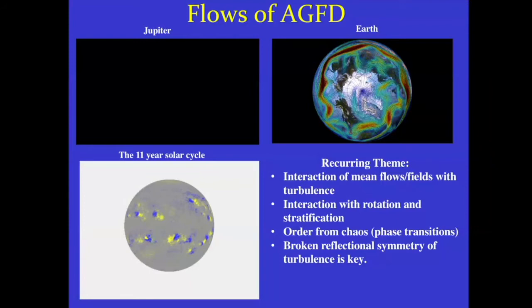We'd like to go to reduced models, and I've put down three ways you can look for them. First, you could do dynamical systems theory and calculate some exact non-linear solutions to the flow you've got, thinking about these as the building blocks of turbulence — a kind of pinball machine where turbulence pings around between these exact non-linear solutions. These solutions are very interesting because they may provide bounds on transport, be it heat transport or wall shear stress in wall-bounded shear flows.